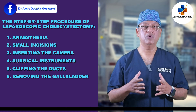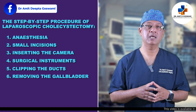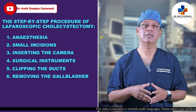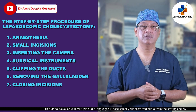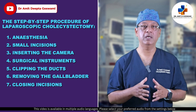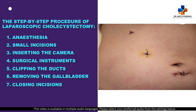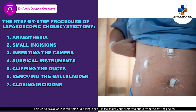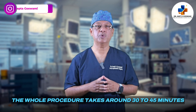For removal, the gallbladder is then gently pulled out through one of the small incisions in the upper abdomen. All the instruments are then removed and the incisions are closed with dissolvable sutures or surgical clips.